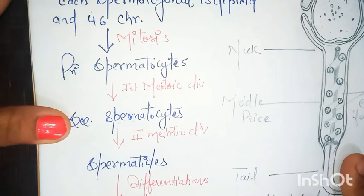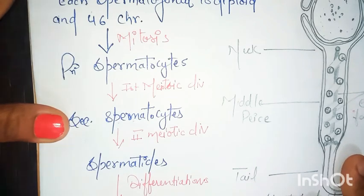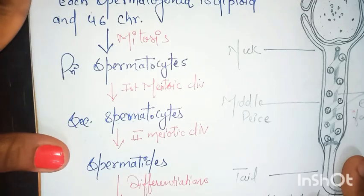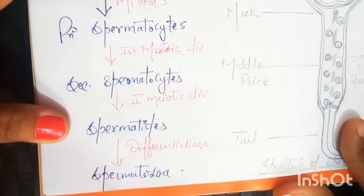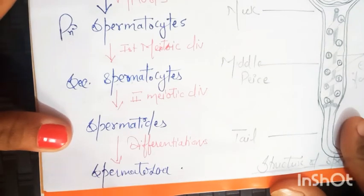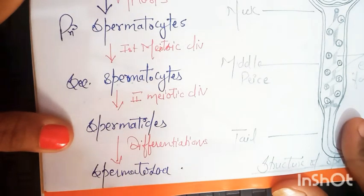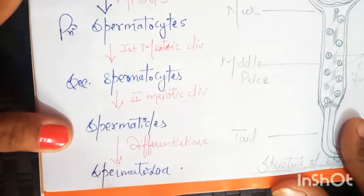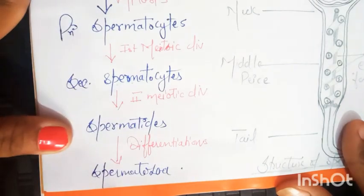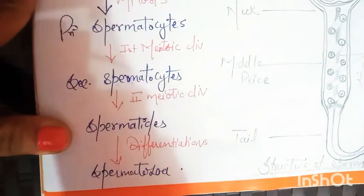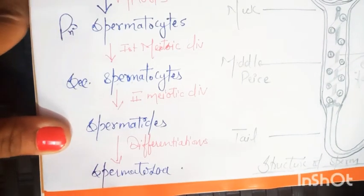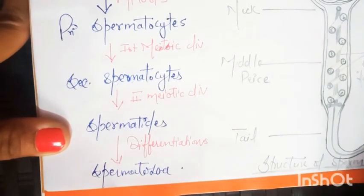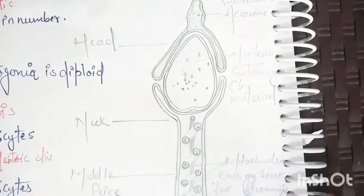Here second meiotic division is going to start and it will form four spermatids. After the differentiation of spermatocyte, four equal haploid spermatids are formed that are converted into sperm, and the process is spermatogenesis.